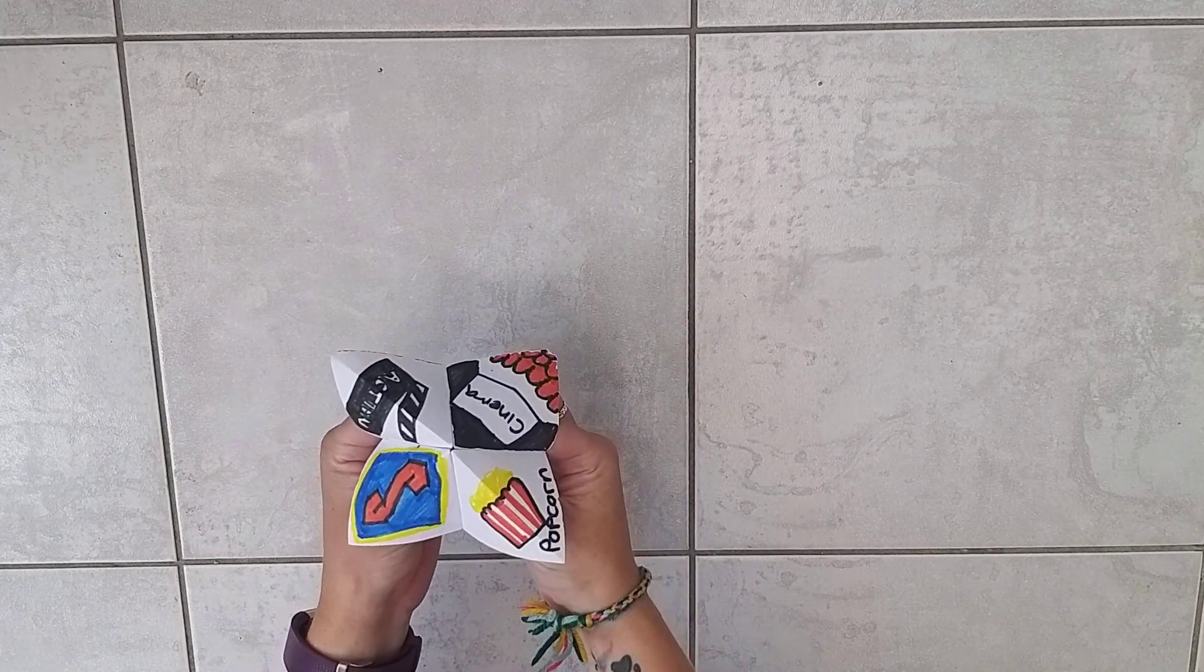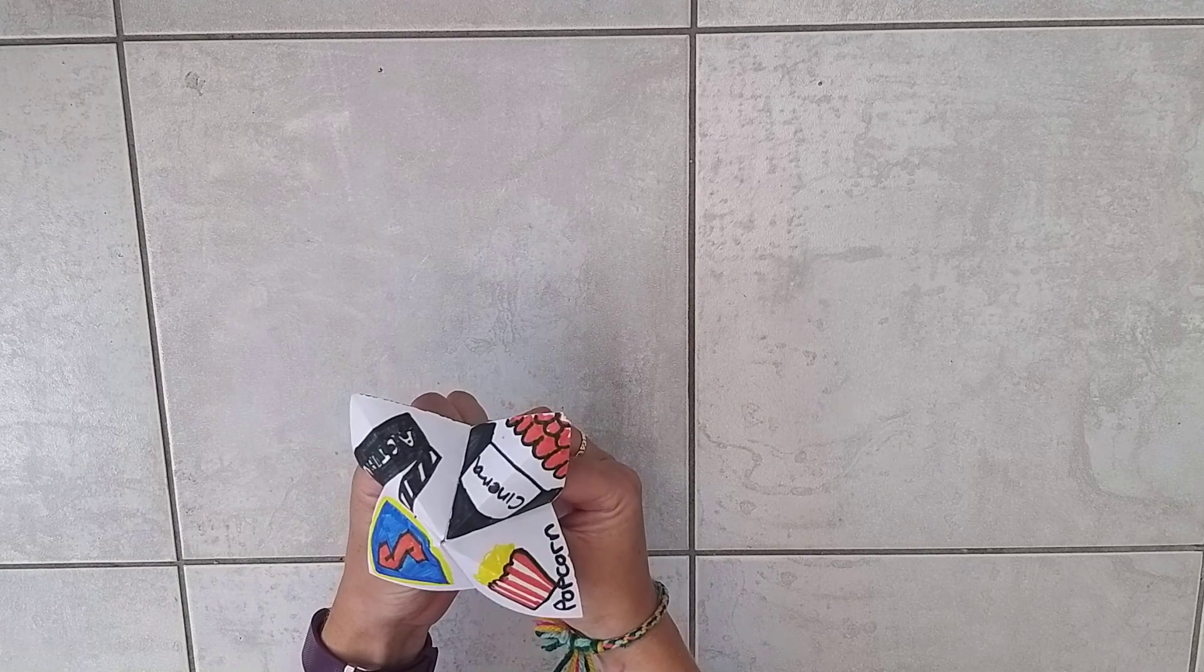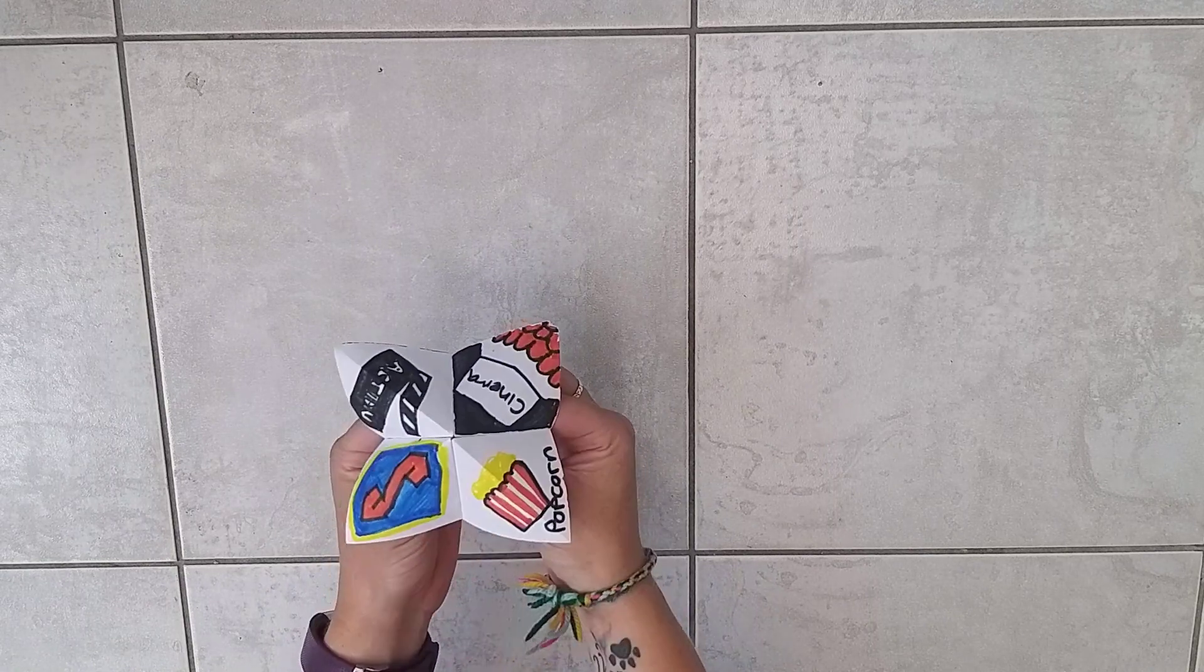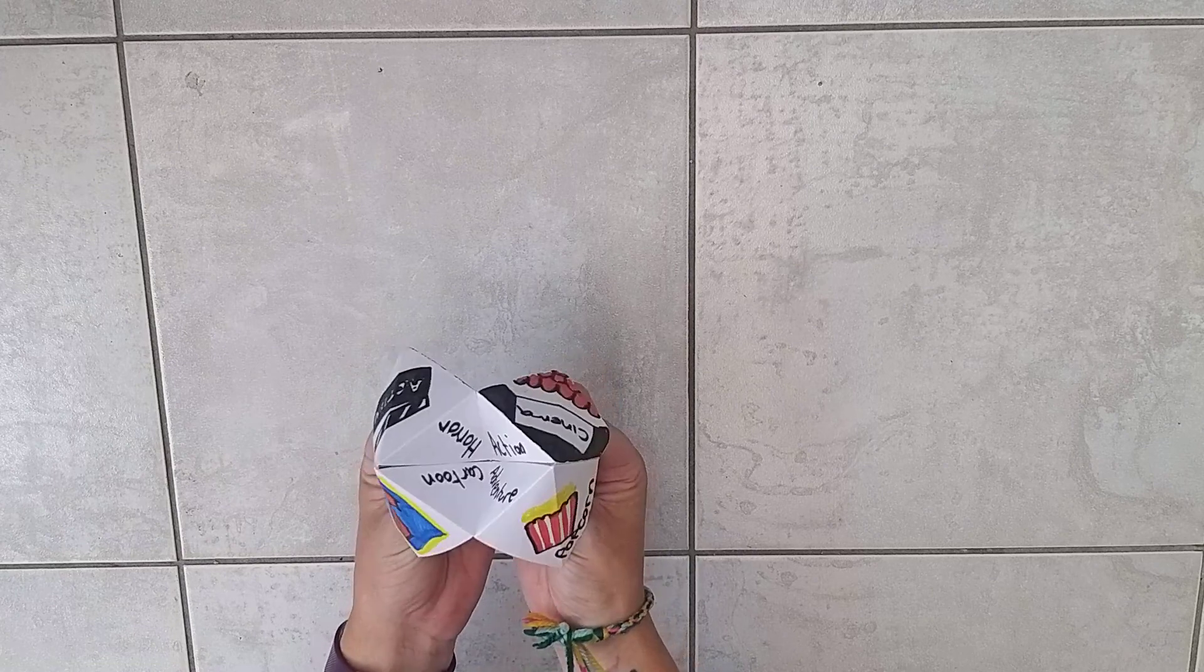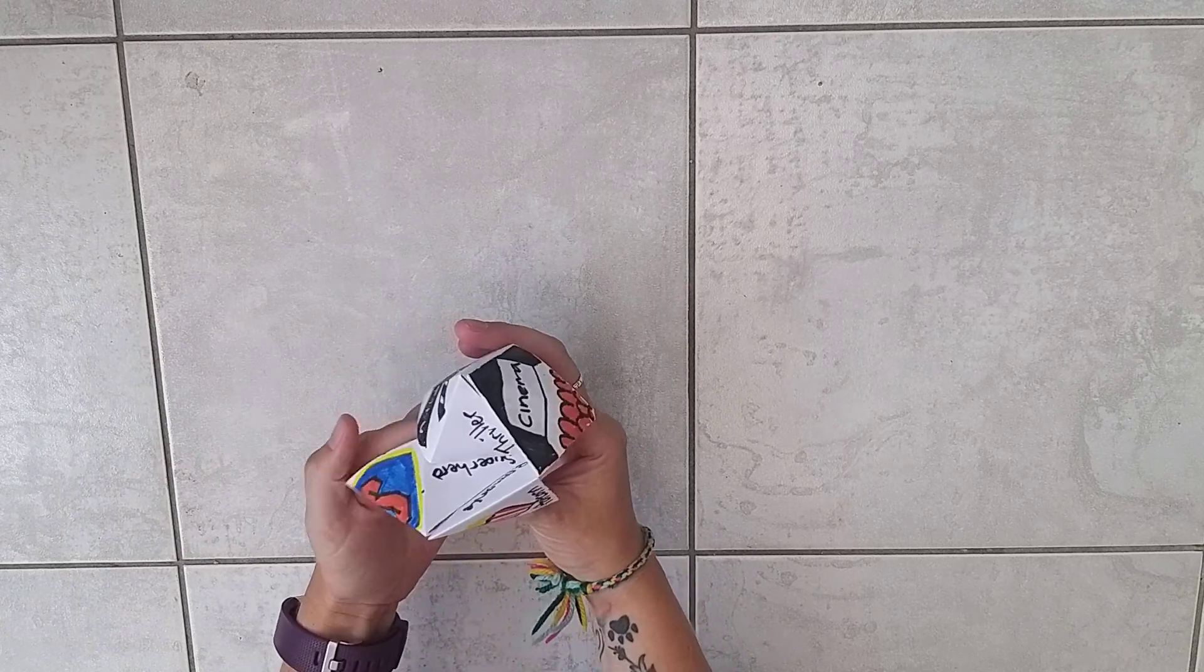You'll ask your family member to pick one. We'll go with popcorn, so you spell the word P-O-P-C-O-R-N. In the middle I've got thriller, comedy, romance, or superhero. I've just put different genres of film.